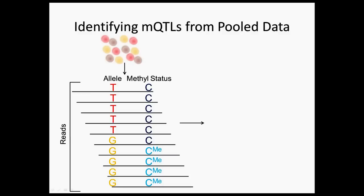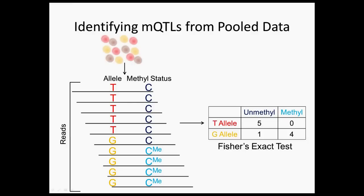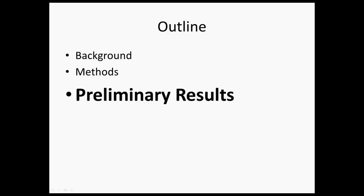We can then count up the different combinations we have of alleles and methylation statuses and use Fisher's exact test to evaluate the significance of the association. In our data set we have hundreds of millions of reads and many SNP-CpG pairs that we want to test associations for. If we were just running this in serial on a single processor, this would take a long time. So we ran this in parallel over thousands of processors and were able to get these associations quickly.